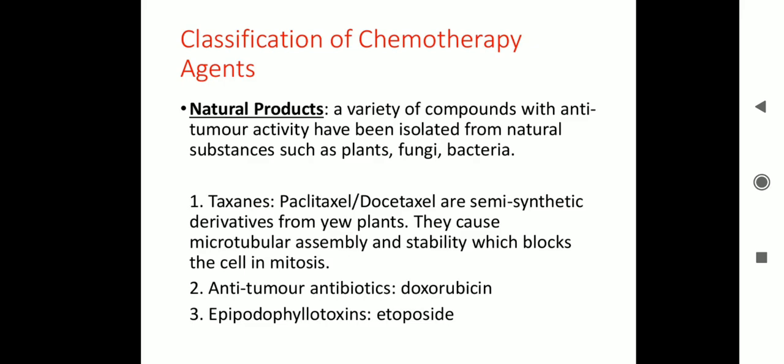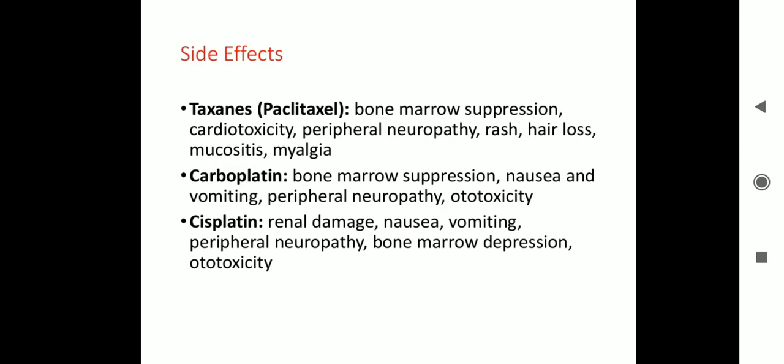Side effects of taxanes include bone marrow suppression, cardiotoxicity, peripheral neuropathy, rash, hair loss, mucositis, and myalgia. Carboplatin side effects: bone marrow suppression, nausea and vomiting, peripheral neuropathy, and ototoxicity. Cisplatin side effects: renal damage, nausea, vomiting, peripheral neuropathy, bone marrow depression, and ototoxicity.